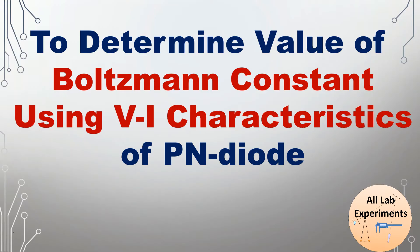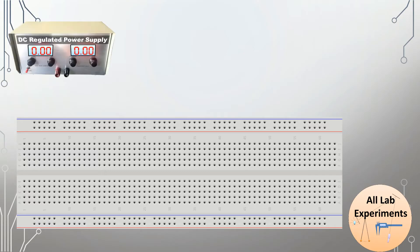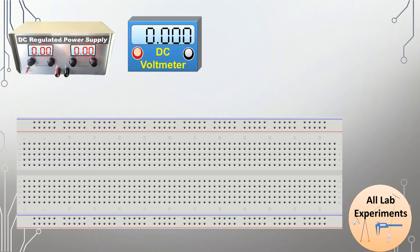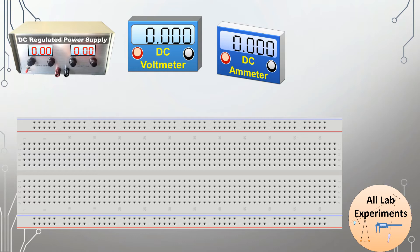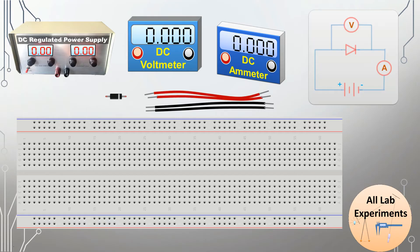To do this experiment we require a breadboard, a power supply, a DC voltmeter, a DC ammeter, a diode, and some connecting wires. Here is the circuit diagram which we require to make on this breadboard.